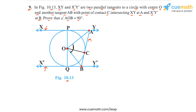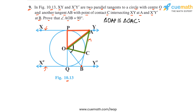Let me write it out step by step. We begin by comparing triangle OAP with triangle OAC. I'll directly use the fact that these two triangles are congruent — you can pause and verify this. From triangle OAP ≅ triangle OAC, it follows that angle PAO equals angle CAO. Let's call both of these angles angle 1.